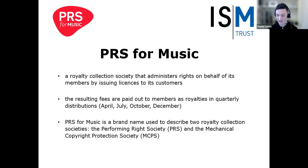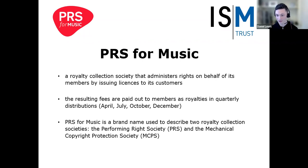PRS for Music is a royalty collection society which consists of approximately 155,000 members. When members join PRS for Music, they assign their rights to us and we administer them on their behalf. We do this by issuing licenses to our customers, who include music venues, broadcasters, any business premises that performs music, streaming platforms, and many others. The fees generated by these licenses are paid out to our members in four main quarterly distributions, which are in April, July, October, and December. Our distributions have a threshold of £30, meaning you need to generate at least £30 in royalties before payment is made. There is an exception for one distribution a year where the threshold is reduced to £1, and usually that's in October.